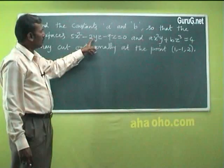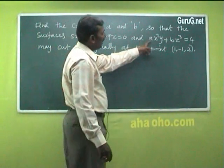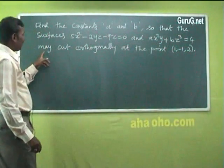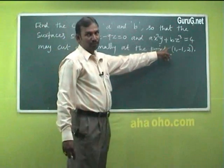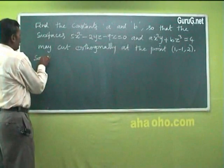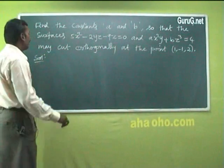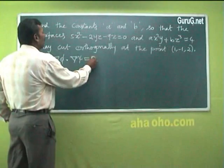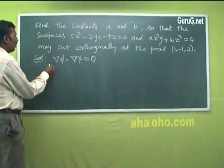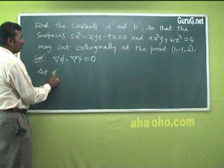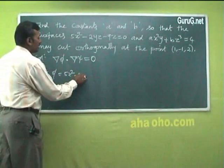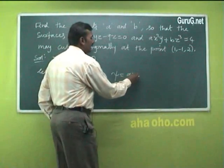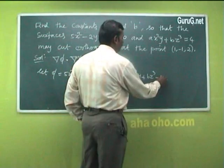The surface is φ: x² − 2yz − 9x = 0 and ψ: Ax²y + Bz³ = 4. They cut orthogonally at the point (1, −1, 2). The condition for two surfaces to cut orthogonally is del φ · del ψ = 0. Let φ = x² − 2yz − 9x and ψ = Ax²y + Bz³ − 4.